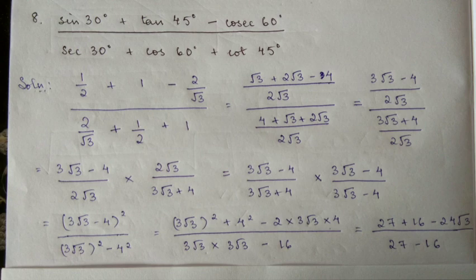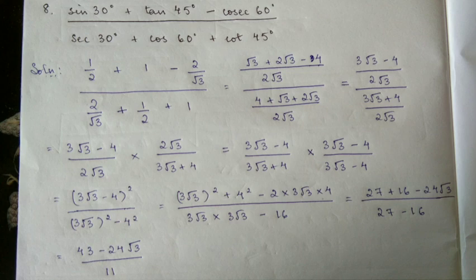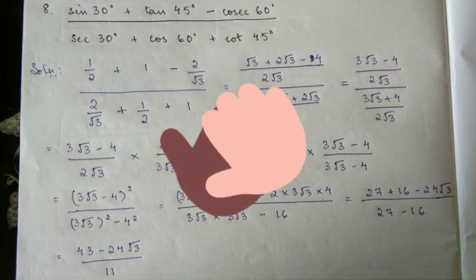Using a plus b times a minus b equals a squared minus b squared formula: 3 root 3 squared is 27, 4 squared is 16, minus 2 into 4 into 3 root 3 is 24 root 3. We get 27 plus 16 minus 24 root 3 divided by 27 minus 16, which equals 43 minus 24 root 3 by 11. You can do questions 1 through 8 and send your answers. Bye bye!